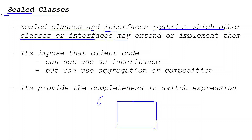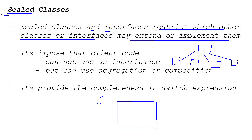Generally, whenever you write any class, that class can be implemented by another class, and any number of classes can implement it — there is no direct control where the superclass decides that only class A or class B can implement this. Previously, there was no option where a superclass could control which classes can extend it. Similarly for interfaces, any number of classes can implement them with no restriction.